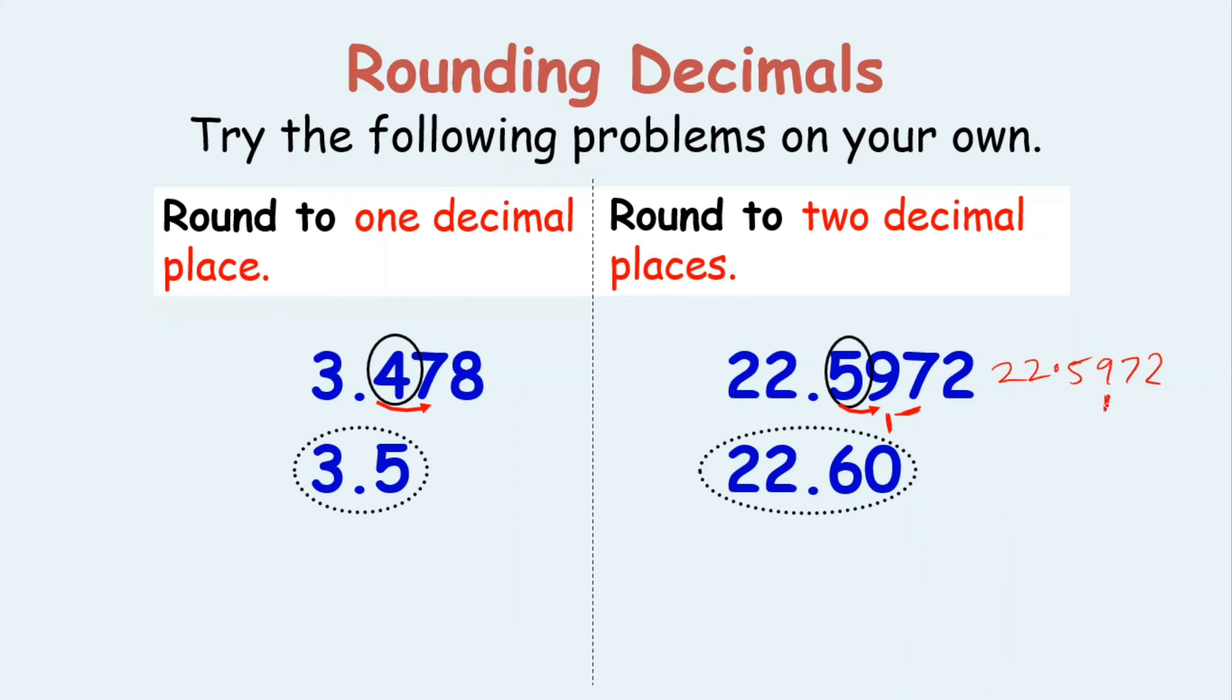22.5972. We add one here. So nine plus one equals ten, carry one. Five plus one equals six. And we get 22.60. Got it?